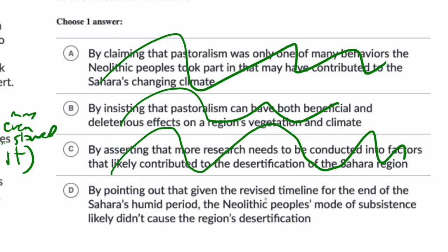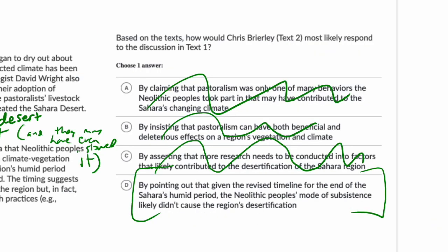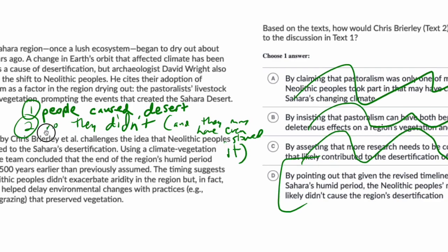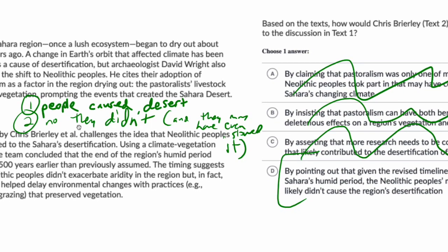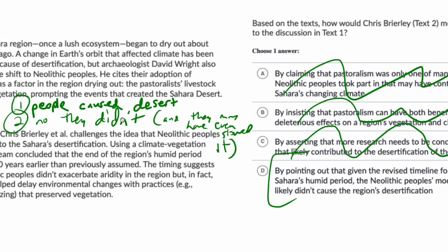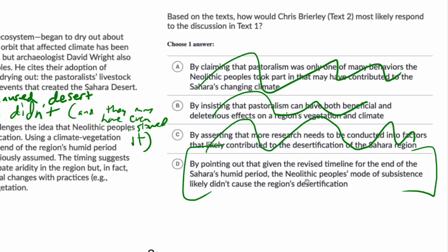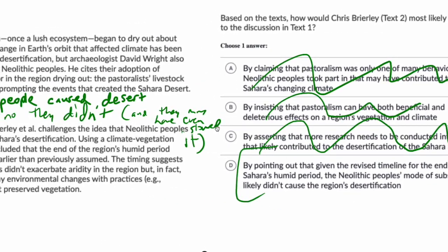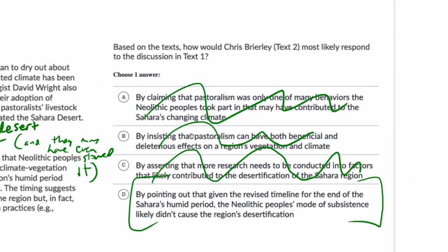Answer choice D: 'by pointing out that given the revised timeline for the end of the Sahara's humid period, the neolithic people's mode of subsistence — basically surviving or finding enough food — likely didn't cause the region's desertification.' That's exactly it. Text 2 challenges Text 1's claim. The neolithic people didn't cause desertification, contrary to what the first passage argues. Our answer is D.